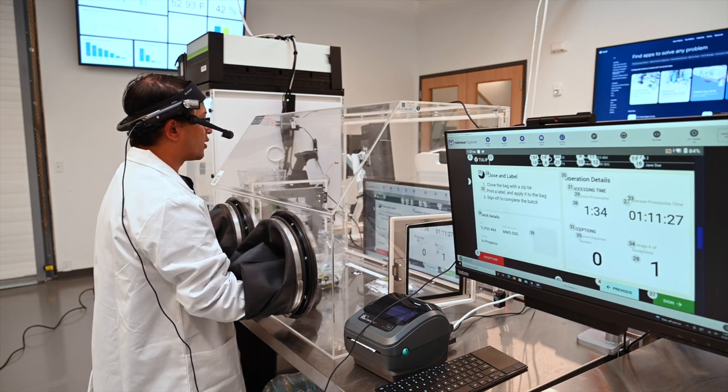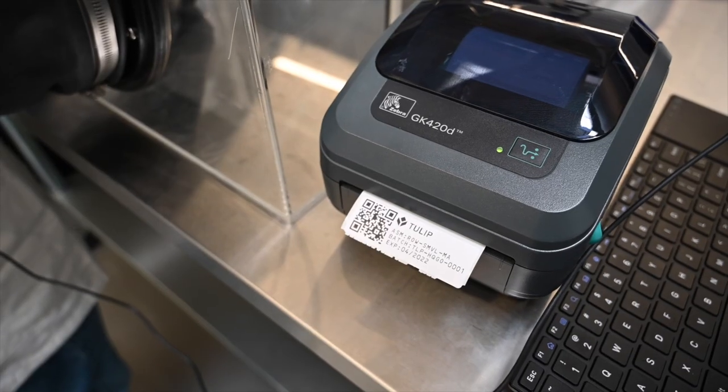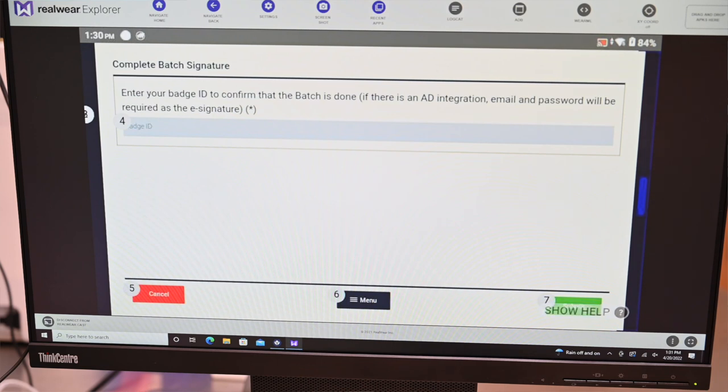Next, I'm going to print out a label. Print. Sign. Select item four.